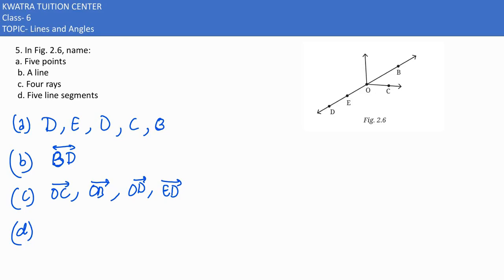Next we have the five line segments. I can clearly see DE, EO, OB, OC, and then one more can be DO. This would be the line segment.